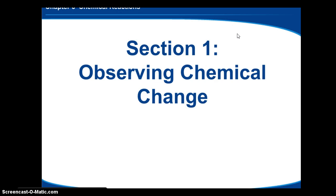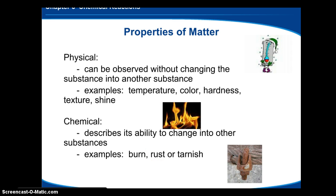Hey guys, this is Chapter 6, Section 1 on observing chemical change. We know some properties of matter which are physical changes and chemical changes, and they can be observed. Physical change can be observed without changing the substance into another substance, meaning we're just changing the temperature, color, hardness, texture, and shine. A chemical change describes something's ability to change into another substance, like if we burn something, if something rusts, or if it tarnishes and something new is created.